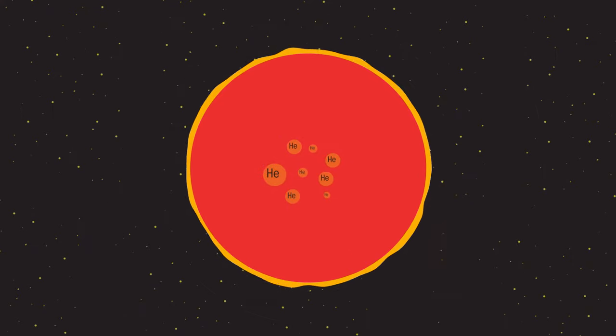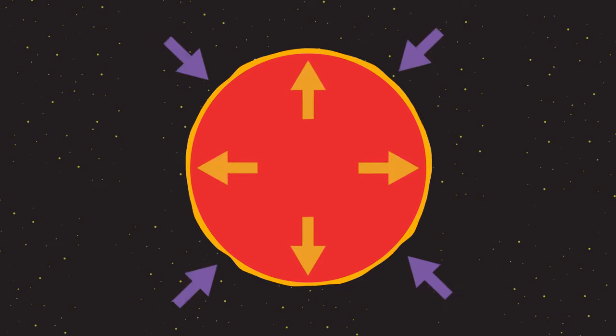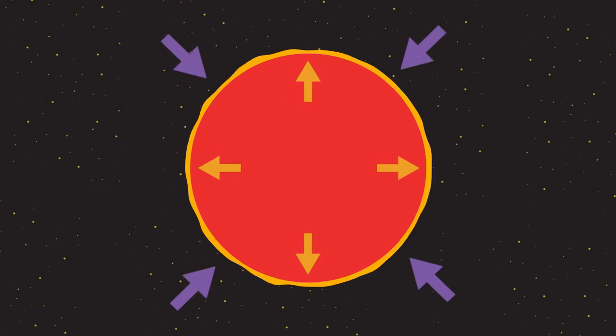Next, fusion of helium in the red giant will eventually stop. Suddenly, the force of gravity is greater than the outward pressure of fusion, causing the star to collapse forming a white dwarf.